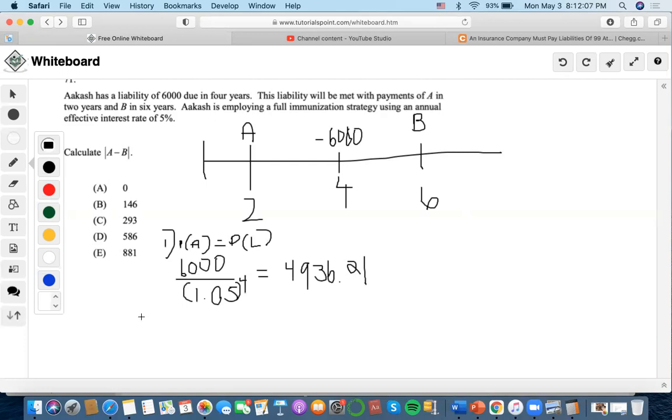Now the second rule is that the duration of assets also need to equal the duration of liabilities. So now we're going to have to take the duration of A times X, because this will consist of how much of A consists of this present value, plus B, which has duration 6, times 1 minus X, equals the duration of the liability.